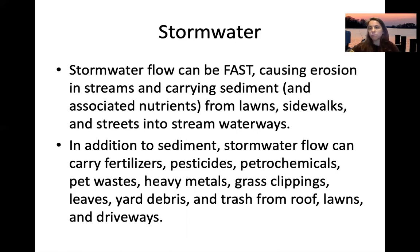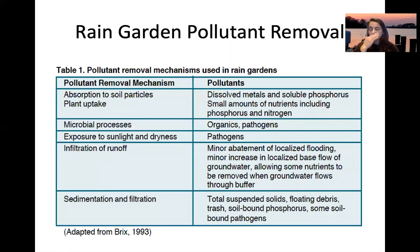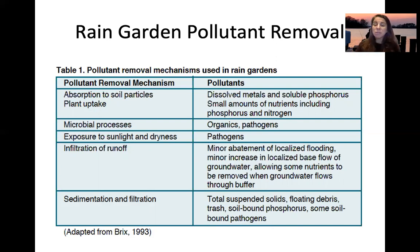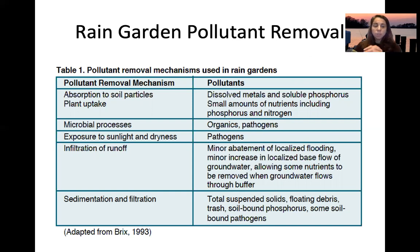In a rain garden, nutrients are removed through several mechanisms: petrochemicals and nutrients can adsorb to soil particles; phosphorus, metals, nitrogen, and phosphorus are removed through plant uptake; microbial processes break down organic pollutants and petrochemicals; and exposure to sunlight and dry-wet cycles can kill pathogens. For example, pet waste with E. coli running into a rain garden can be treated by UV penetration followed by dry-wet cycles.